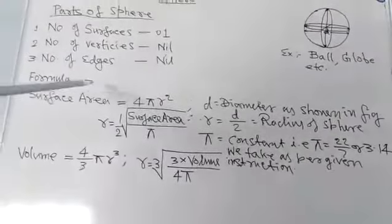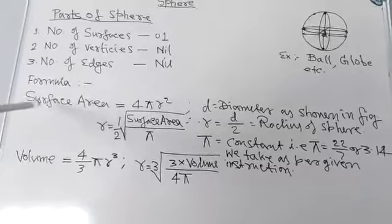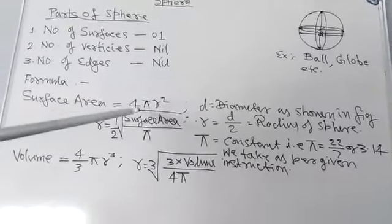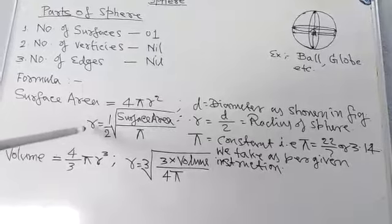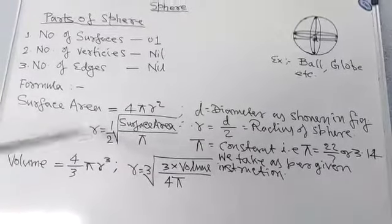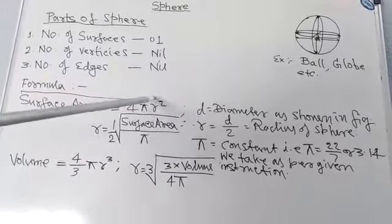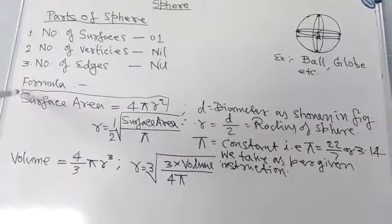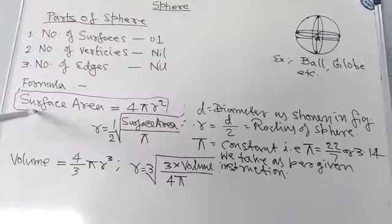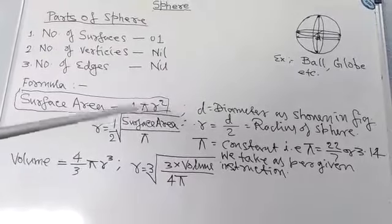And the formula we are going to study is the formula. Surface area is equal to 4πr². And now, if you want to find out the r, then naturally it will be the surface area. It is actually the formula based like this. This is the same thing, the surface area.